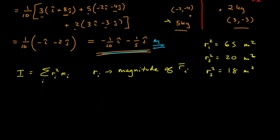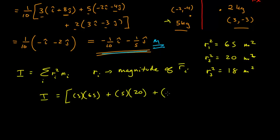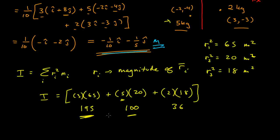Now we calculate the moment of inertia: I = 3 × 65 + 5 × 20 + 2 × 18 = 195 + 100 + 36 = 331 kg·m². The large mass of the second object makes a significant contribution, and the r squared factor matters a lot when objects are far from the axis. This is the moment of inertia about an axis going through the origin.